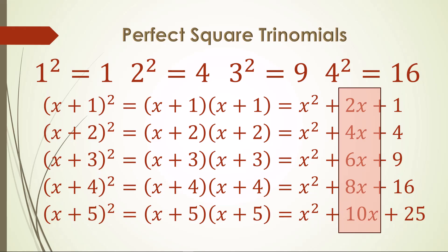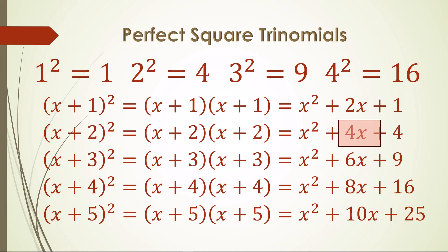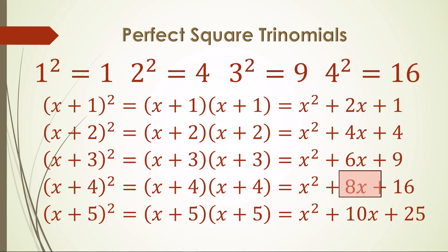For the x plus 1 squared trinomial, the middle term is 2x. For x plus 2 squared, the middle term is 4x. This is a simple result of the FOIL method combining the two middle terms, but in a very predictable pattern. This continues with x plus 3 squared with a middle term of 6x, x plus 4 squared with 8x, and x plus 5 squared with 10x.